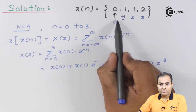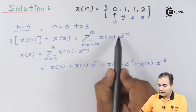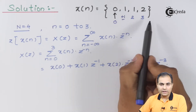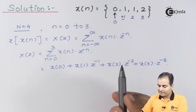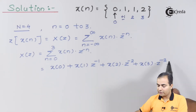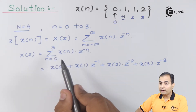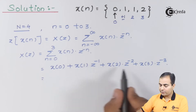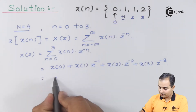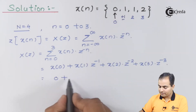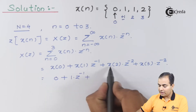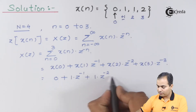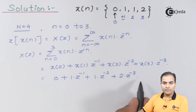All the sample instances have a positive sign, so the powers of z will be negative. That's why we get z to the power minus one, z to the power minus two, and z to the power minus three. Now substituting: x(0) equals zero, x(1) equals one multiplied by z to the power minus one, x(2) equals one multiplied by z to the power minus two, and x(3) equals two multiplied by z to the power minus three.